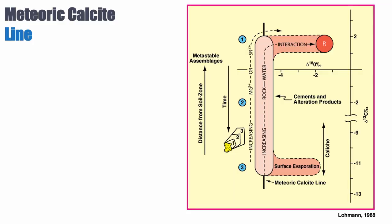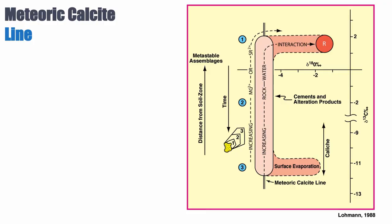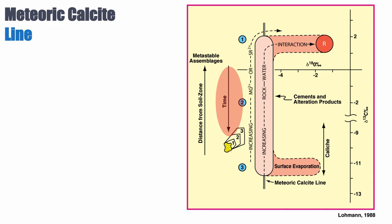Now let's see what happens with oxygen isotopes. We have this diagram, which is quite famous for meteoric diagenesis — it's known as the meteoric calcite line, introduced by Lohmann in 1988. Here we have a cross plot of delta O18 versus delta C13. To understand the composition of meteoric cement over time, we need to consider water-rock ratio. Two parameters to consider are the distance from the soil zone, which increases going up the diagram, and the time of residence of the water in the rock.